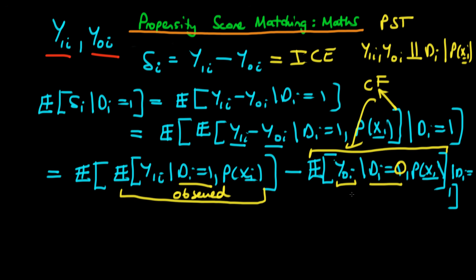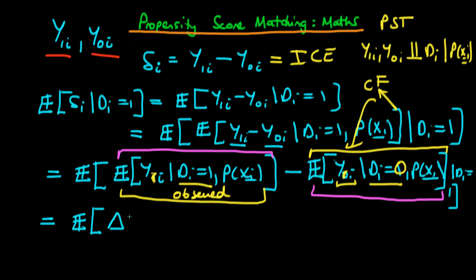Hence, we are estimating this counterfactual by using something which is actually observed — now we set di equal to 0, so we observe the outcome variable for that individual. Since both terms are now observed, we can drop the potential outcome notation and use yi, which in the Rubin causal model denotes the observed variable. The first part of the expression is the average observed outcome for the group who chose treatment given a particular propensity score, and the second is the average outcome for the group who did not choose treatment but have a similar propensity score.